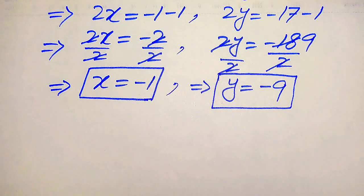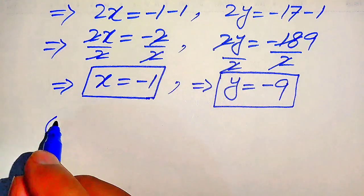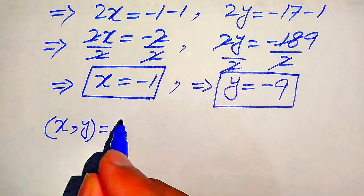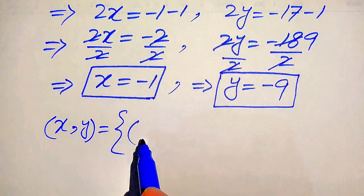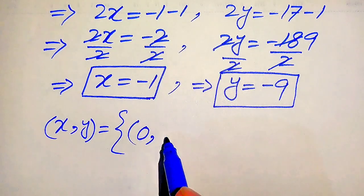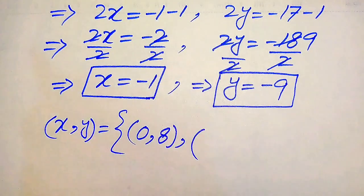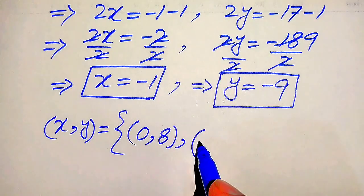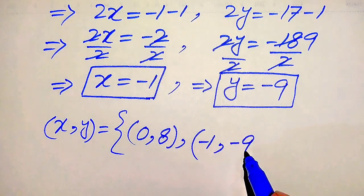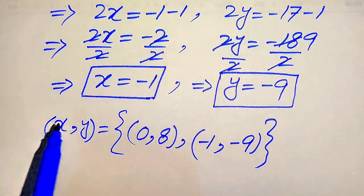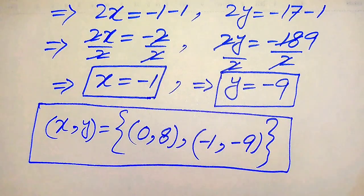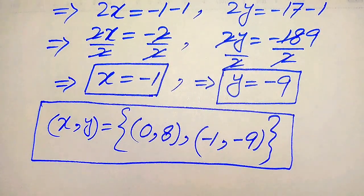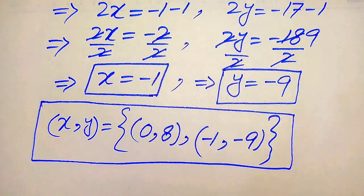In Case 2, both values are negative. Finally, the two solutions of the given equation are: (x, y) = (0, 8) and (x, y) = (−1, −9). I hope you liked this method. If you have another method in mind, please share it in the comment section. Thank you so much for watching — please subscribe to my channel for more exciting videos.